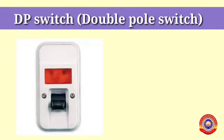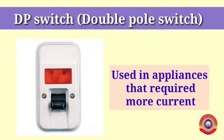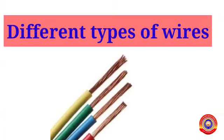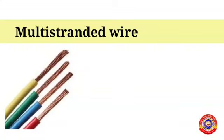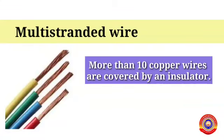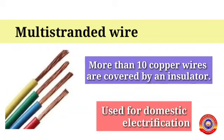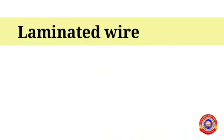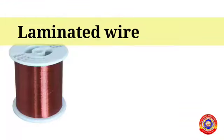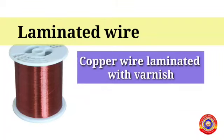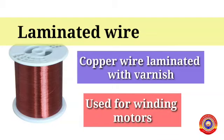DP switch — double pole switch: these switches are used to operate appliances like electric motors that require more current. Next, we are going to see different types of wires. Multi-stranded wire: more than 10 copper wires are covered by an insulator. Wires of this kind are used for domestic electrification. Laminated wire: copper wire laminated with varnish. This type of wire is used for binding motors.